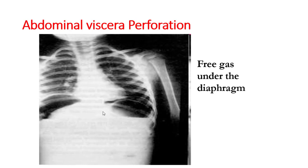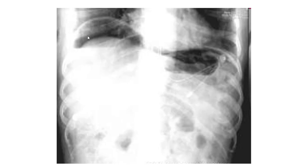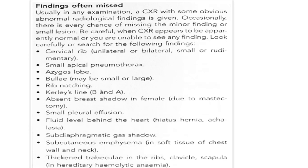Visceral perforation — most commonly stomach or small intestine — results in free gas under the diaphragm on chest X-ray, which should be taken in the erect posture. This gas shadow under the diaphragm is the important finding of perforation of hollow viscous organs of the abdominal cavity.